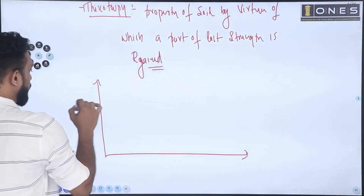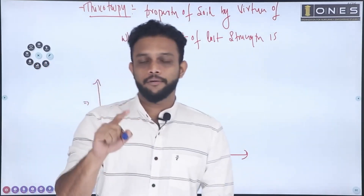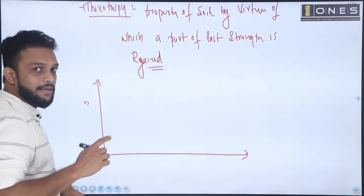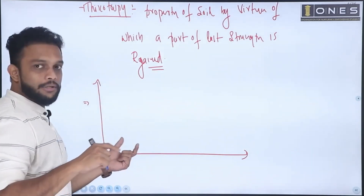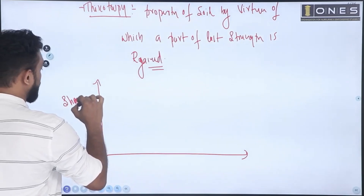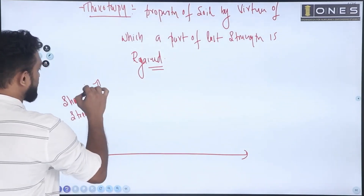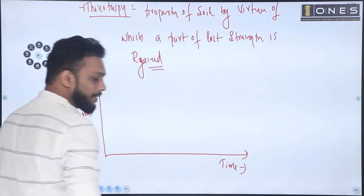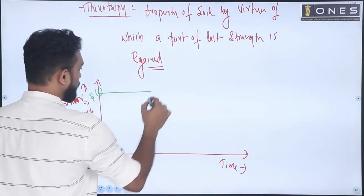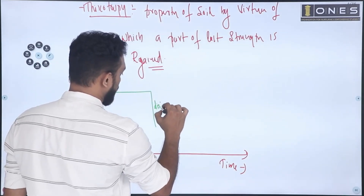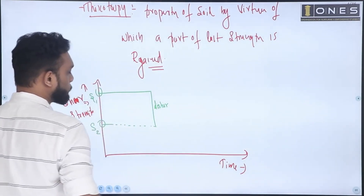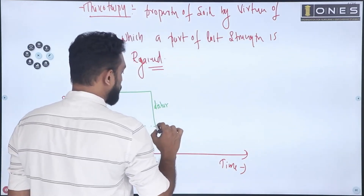Let's look at this graph. The X-axis represents time and the Y-axis represents strength. We mark S1 as the undisturbed strength. After remoulding, the strength drops to S2. Over time, if you allow the soil to rest, the strength partially recovers — this is thixotropy.